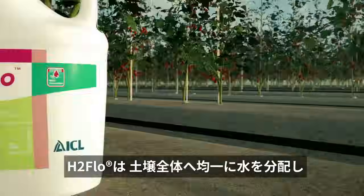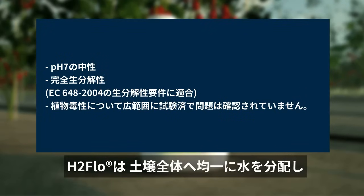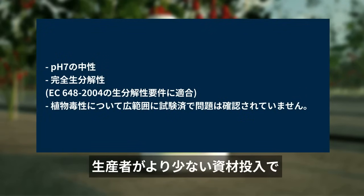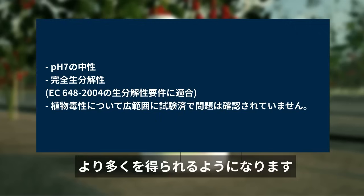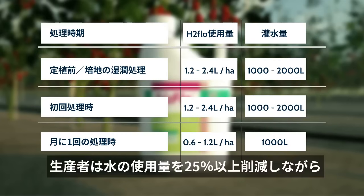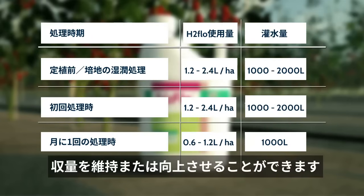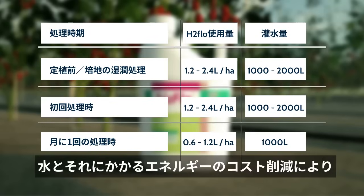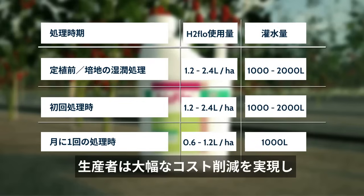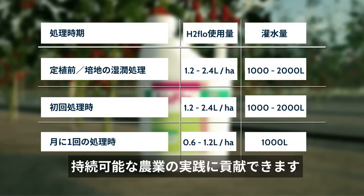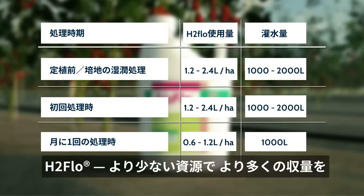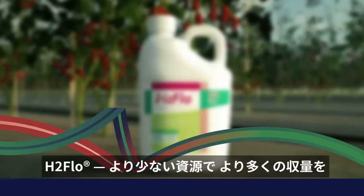H2 Flow enables better water distribution throughout the soil, allowing growers to do more with less. Growers can reduce water usage by 25% or more while maintaining or improving yields. With this reduction in water and associated energy pumping costs, growers will see significant savings as well as contributing towards sustainable growing practices. H2 Flow — grow more with less.